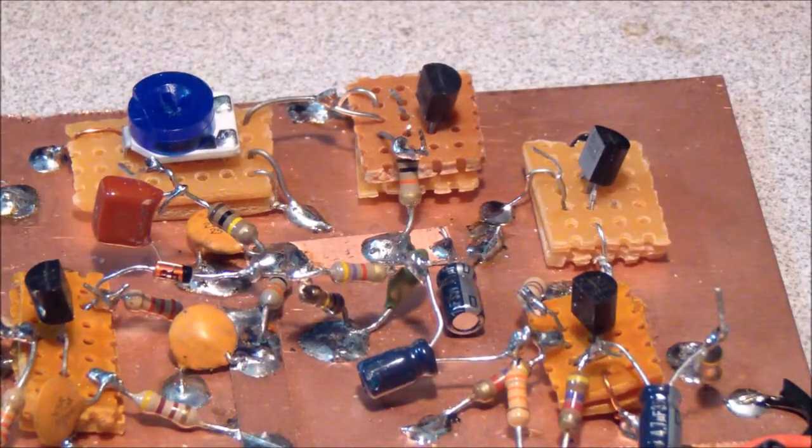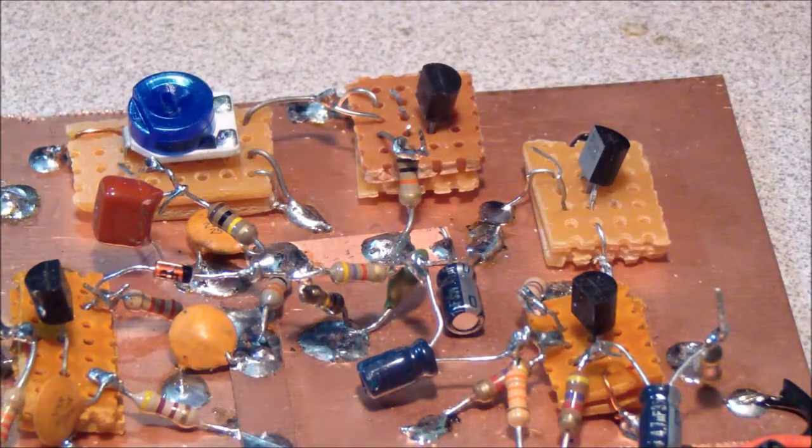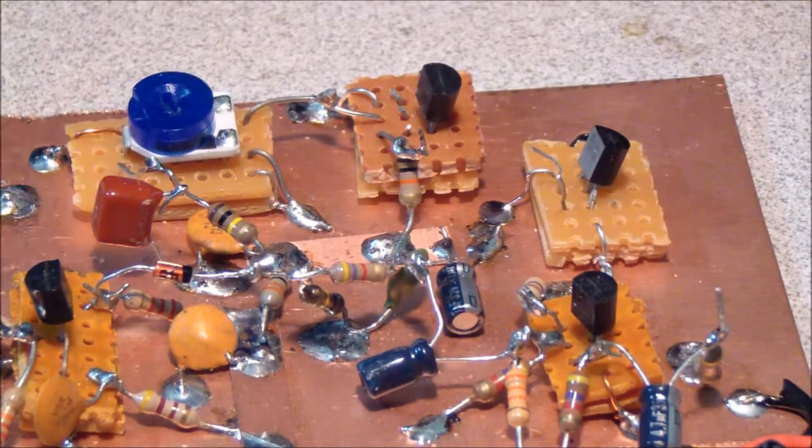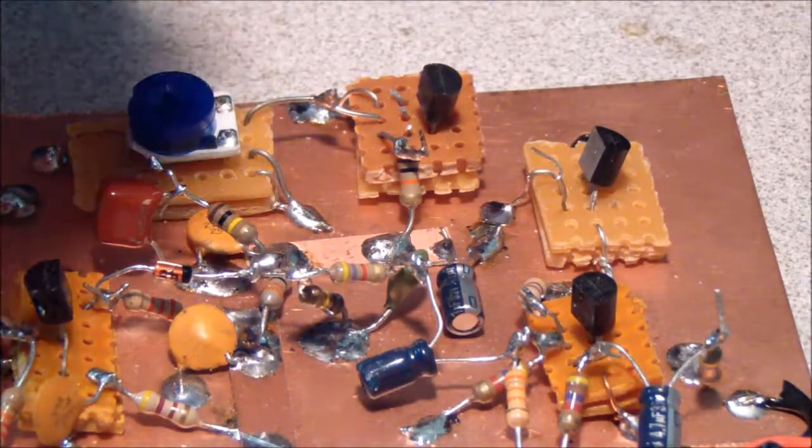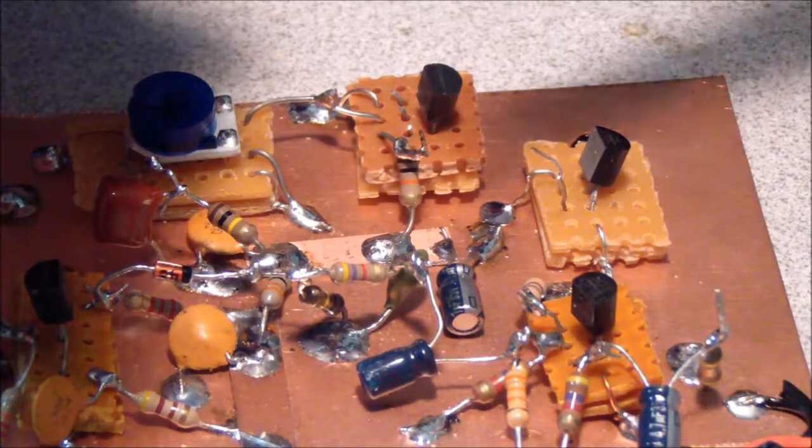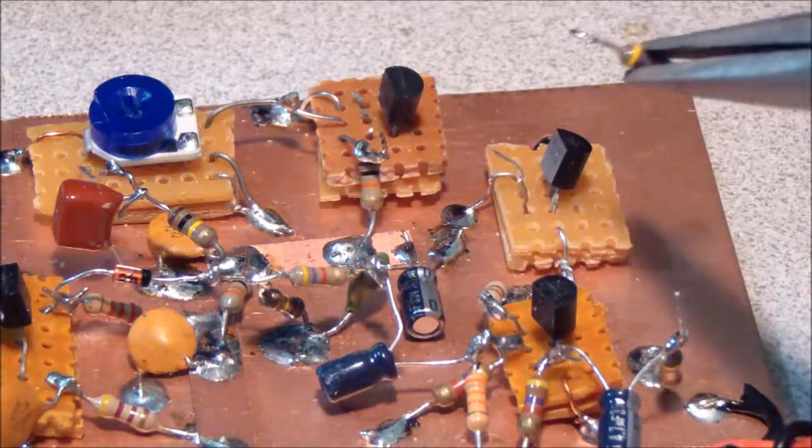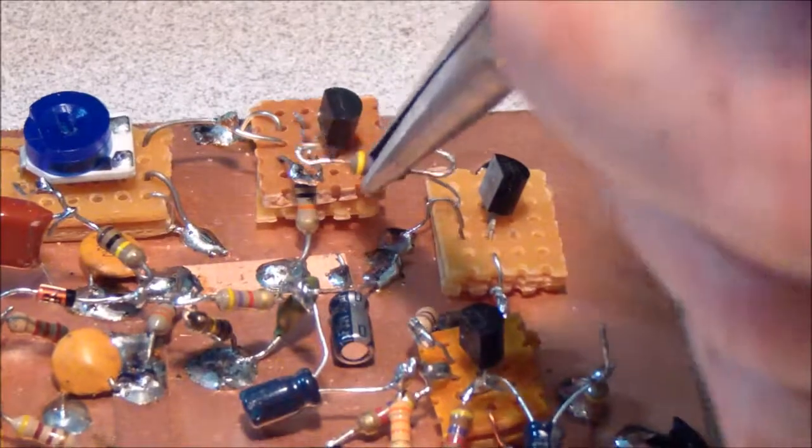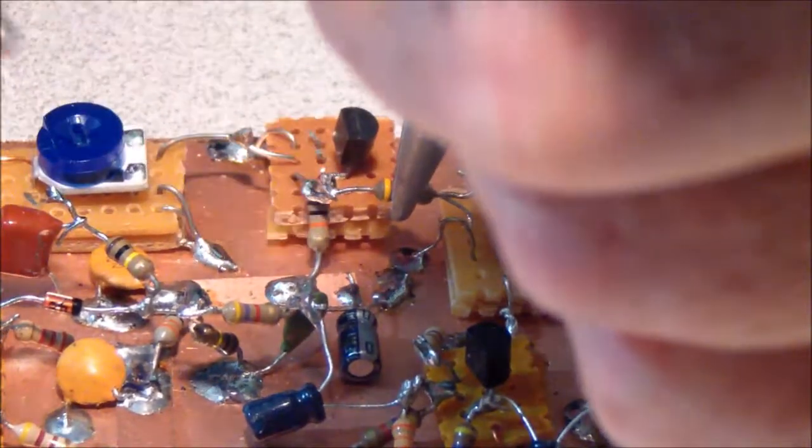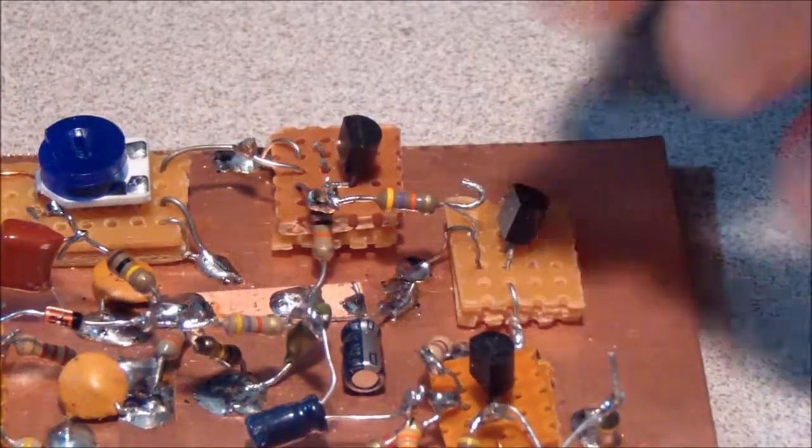And then the next component to go in will be a 47K resistor, 47,000 ohms. And the color code is yellow, violet, orange. And that resistor will connect from the collector of the preceding AGC stage to the base of the second stage that we're installing right now.